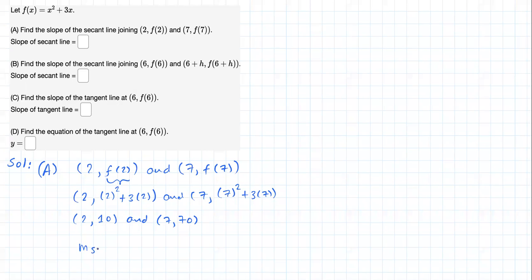Now let's calculate the slope applying this formula. Difference of the output values on the top, difference of the input values on the bottom. x₁, y₁, x₂, y₂. So this is going to be (70-10)/(7-2). 70-10 is 60, 7-2 is 5. 5 into 60 is just 12. And this should be the answer for part A.